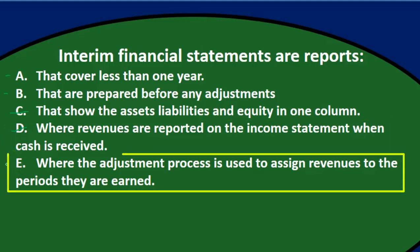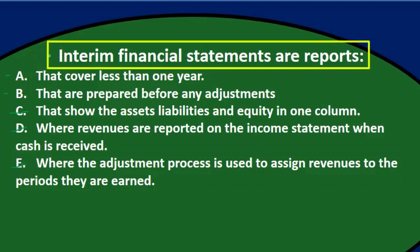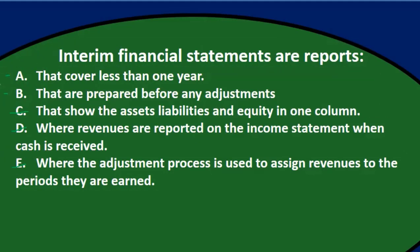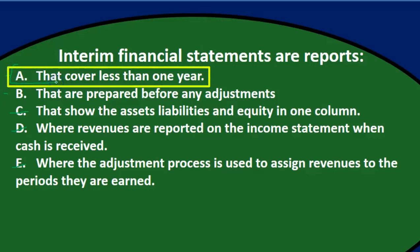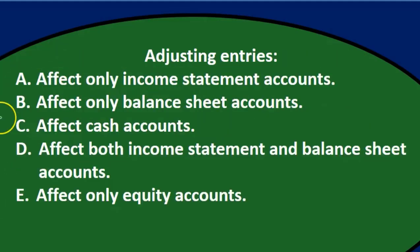Where the adjustment process is used to assign revenues to the period they are earned — the adjustment process applies the revenue recognition principle, but the revenue recognition principle is not specific to just the interim time period, so that's probably not it. Of the remaining options A and B, I think A is going to be the one: interim financial statements are reports that cover less than one year.